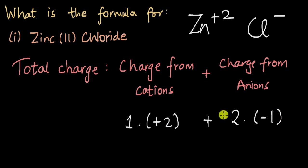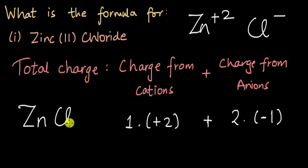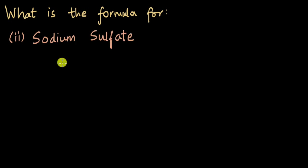If we take two chloride ions — two times minus one — the charge on the chloride ion, this becomes equal to zero. So one ion of Zn plus two ions of Cl⁻ are required to make the total charge zero, and the formula becomes ZnCl₂.